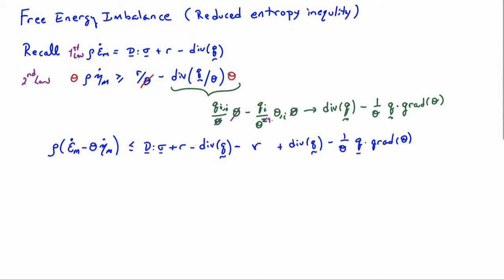So now if I subtract the second law from the first law, I'm going to get rho epsilon M dot minus theta eta M dot is less than or equal to the stress power plus the volumetric heating minus the divergence of Q minus the volumetric heating again, plus the divergence of Q minus 1 over theta Q dot grad theta.